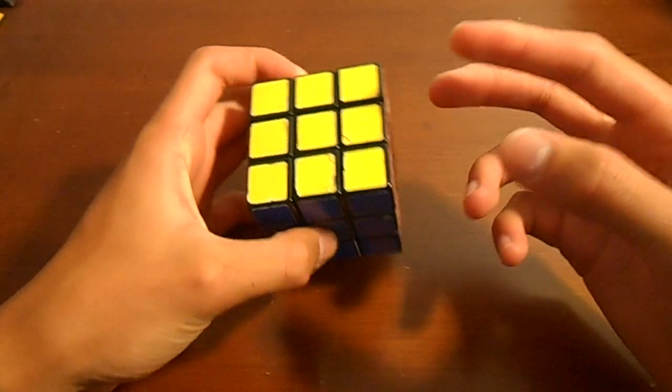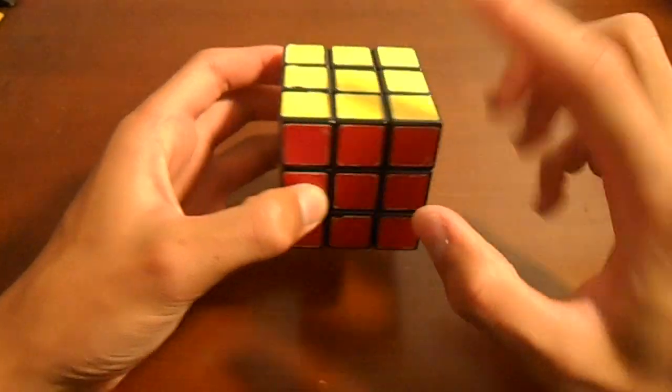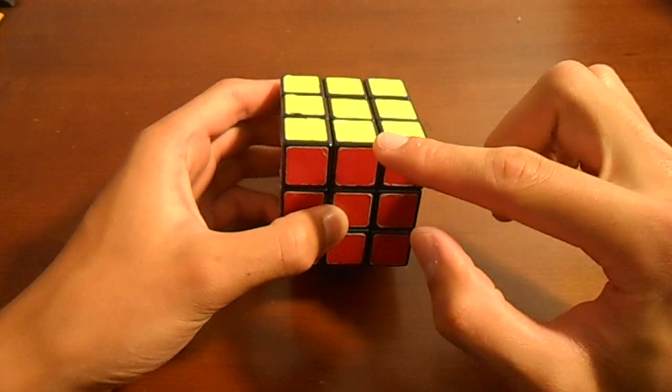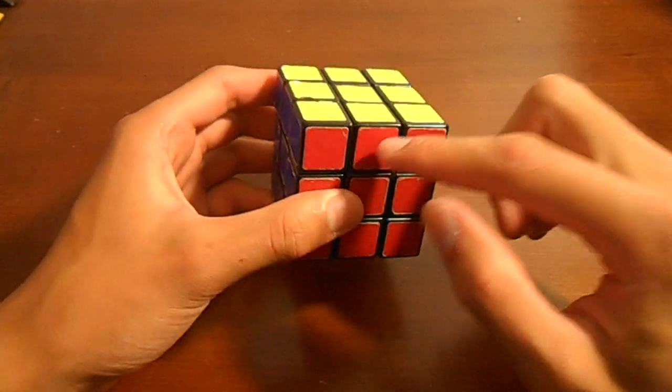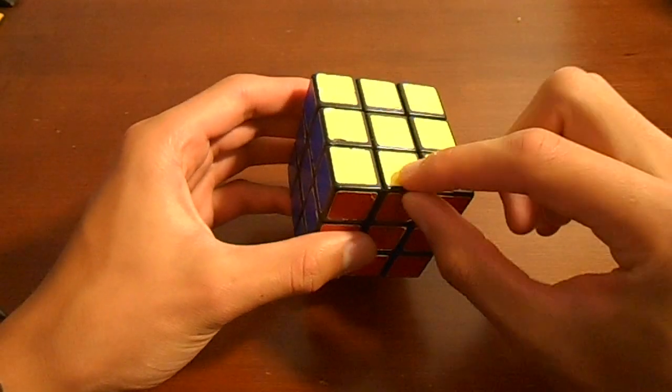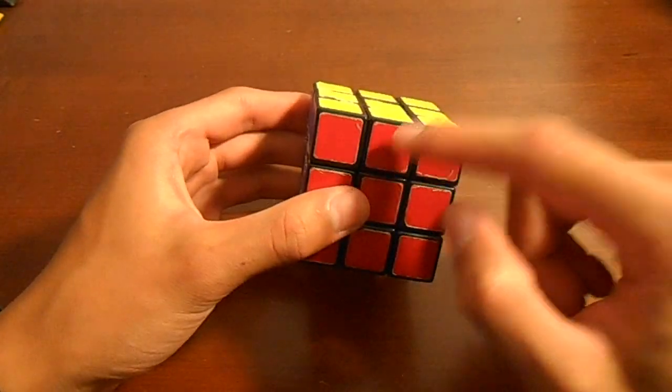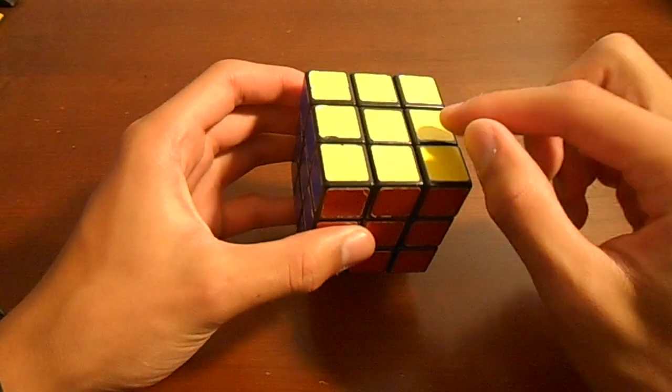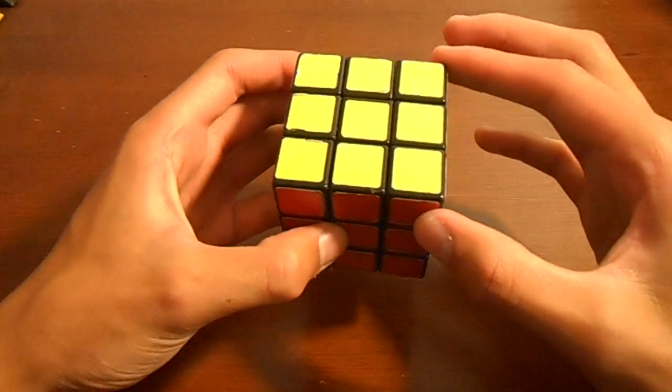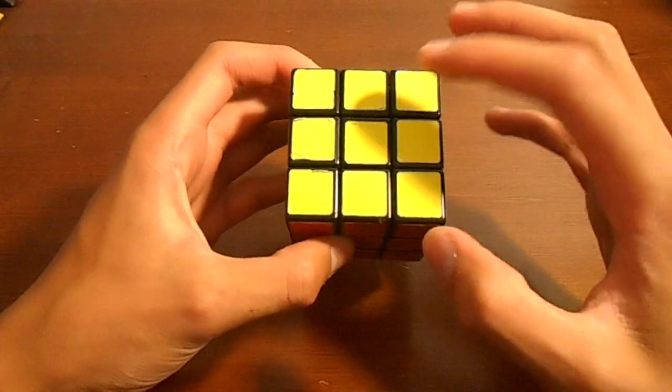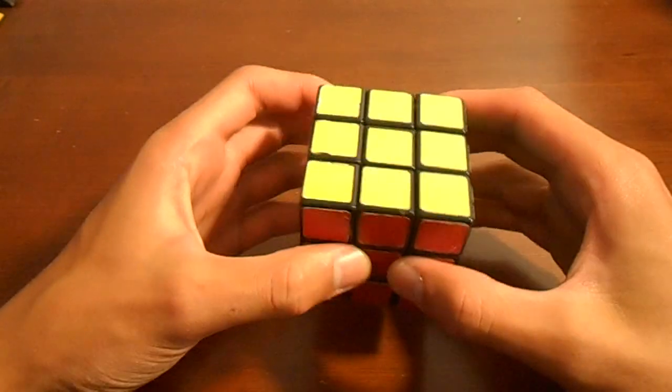The second kind of piece is the edge piece. I will refer to these as the two sticker colors that are on them. For example yellow and red, so that's a yellow red edge piece. Those are the ones in between the corners. Don't get edges confused with corners, it can be very easy.